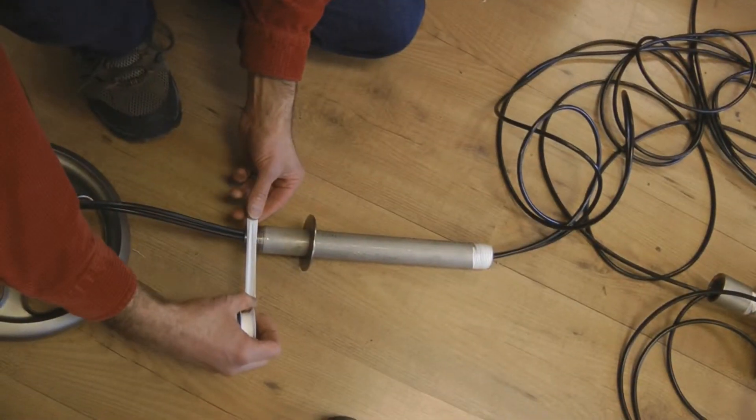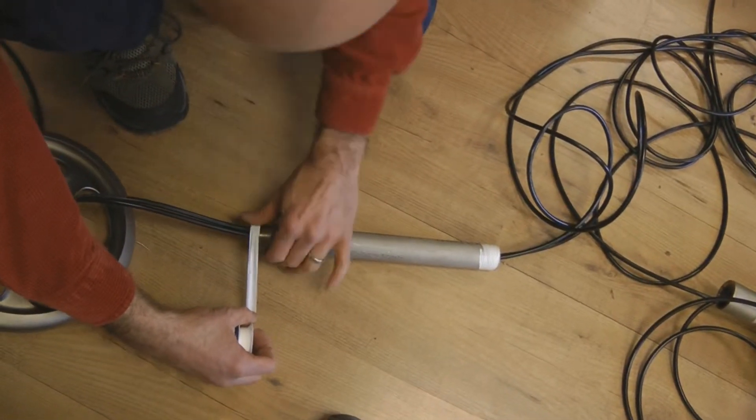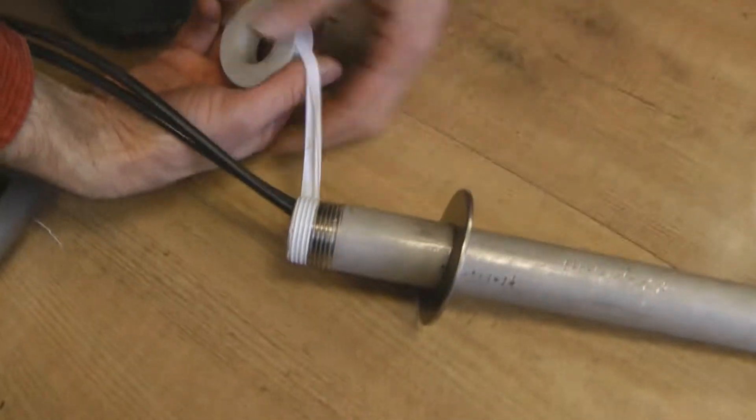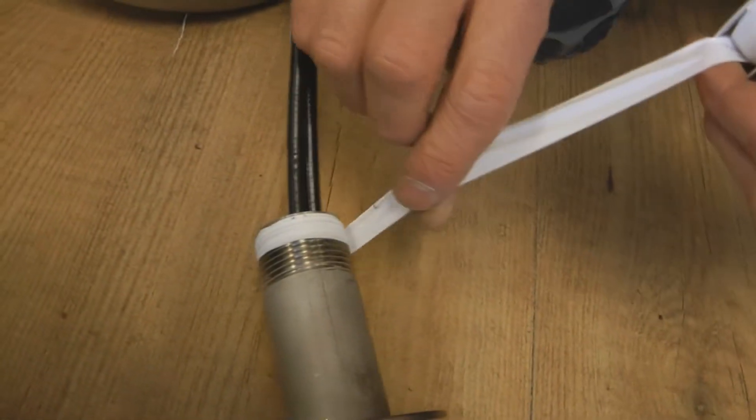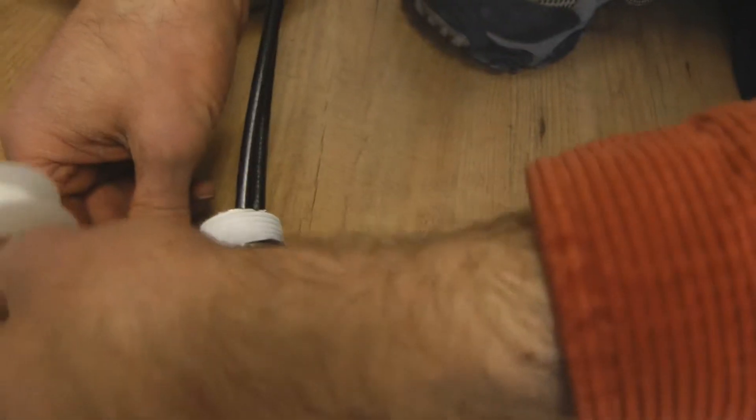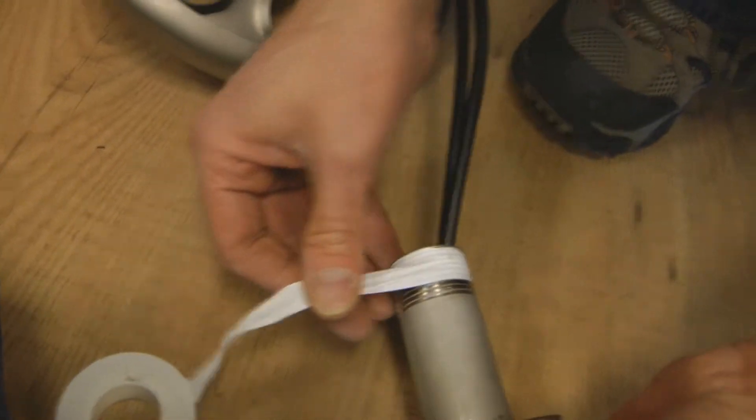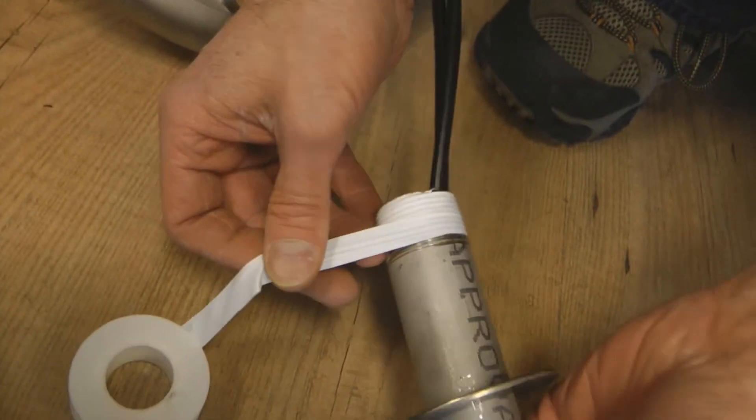You always want to put the pipe tape on so that it's going in the direction that something will be tightened. So when you tighten it, you continue to wrap the tape on. If you don't do it that way, what happens is you pull the tape off.